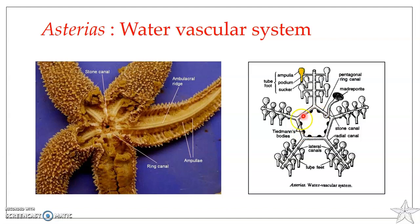There are nine pairs of Tiedemann's bodies in total; the tenth inter-radial position is where the stone canal opens into the ring canal, so no Tiedemann's bodies are present there. The functions of Tiedemann's bodies: they are believed to be filtering devices, they produce phagocytic amoebocytes released into the water vascular system, and they are also considered enzyme-forming bodies by certain scientists.